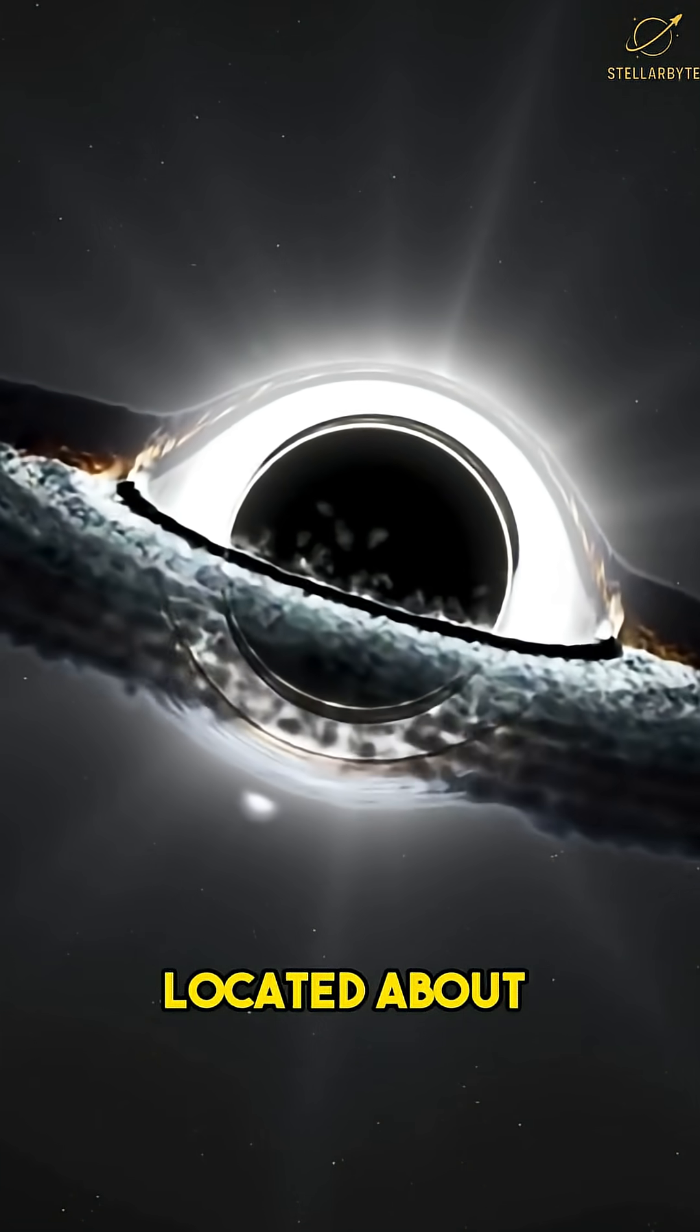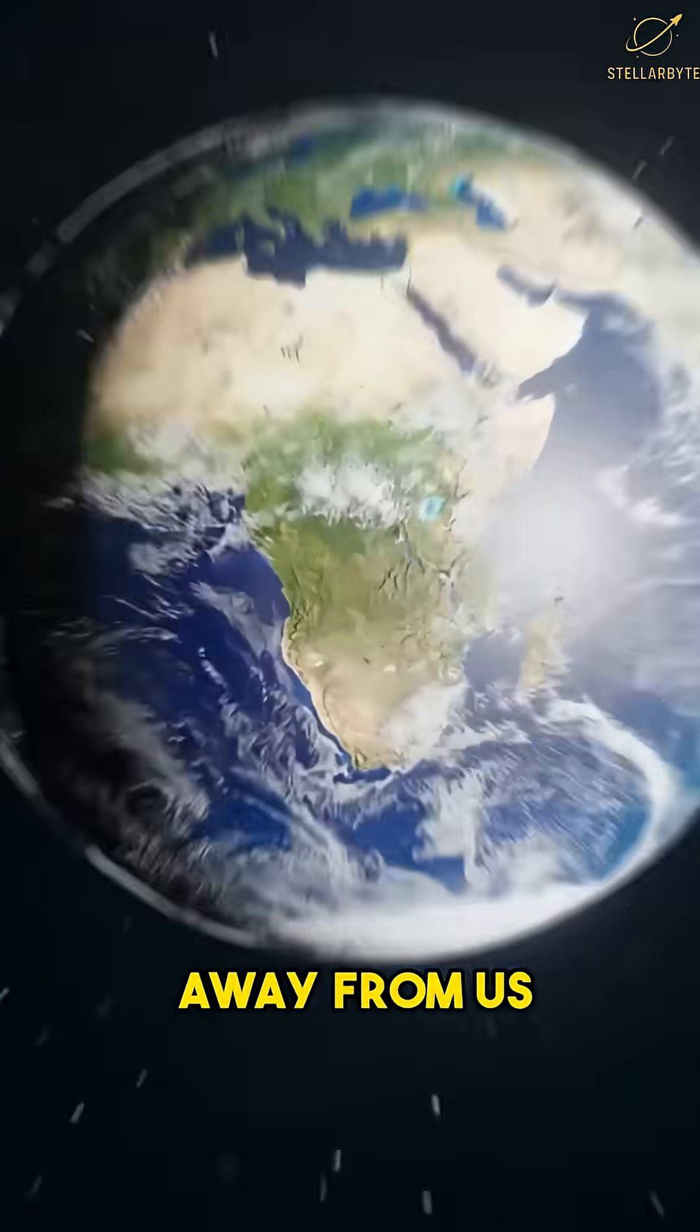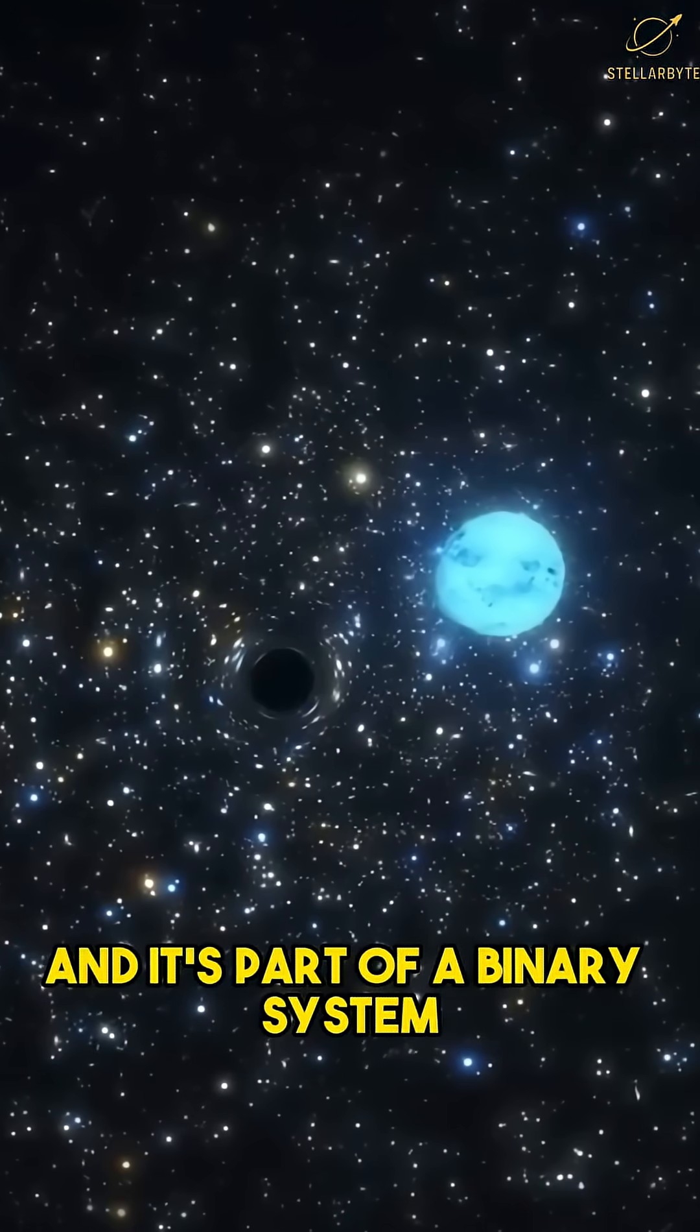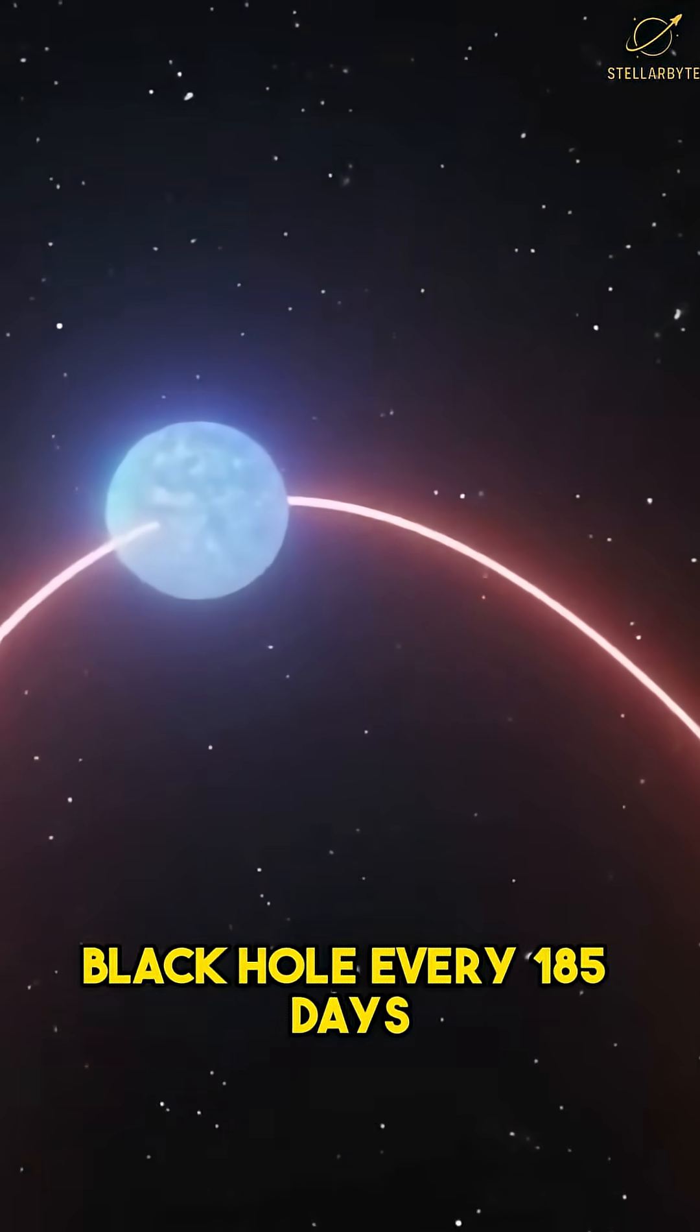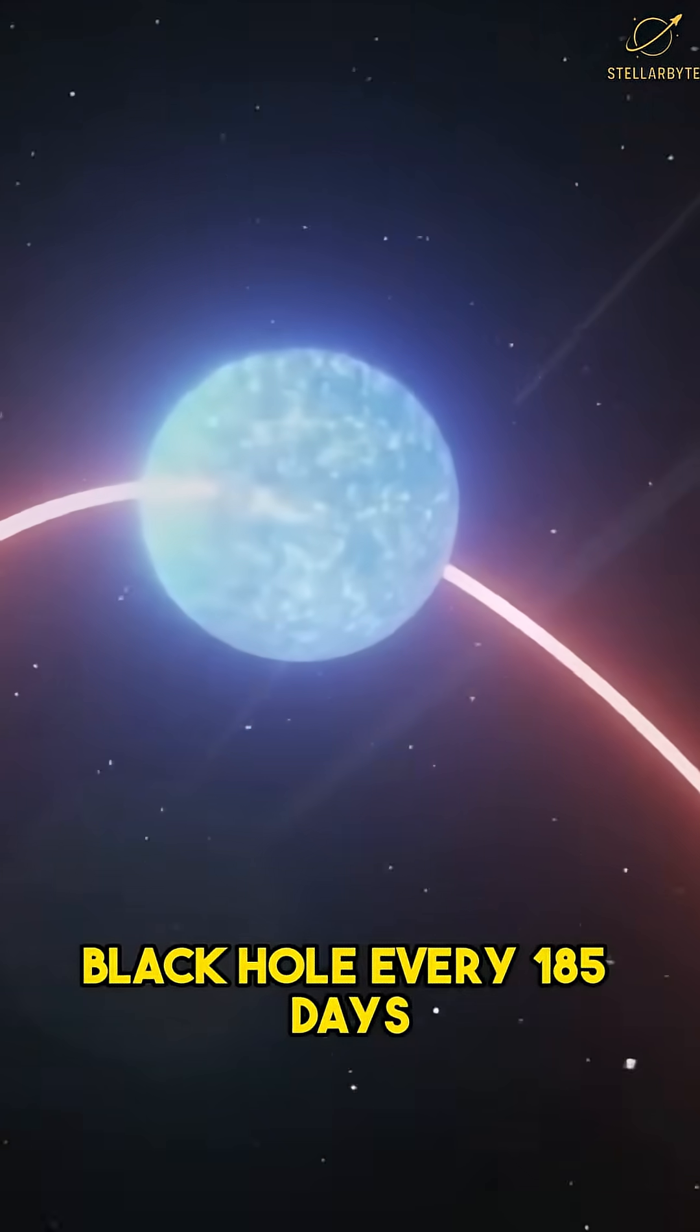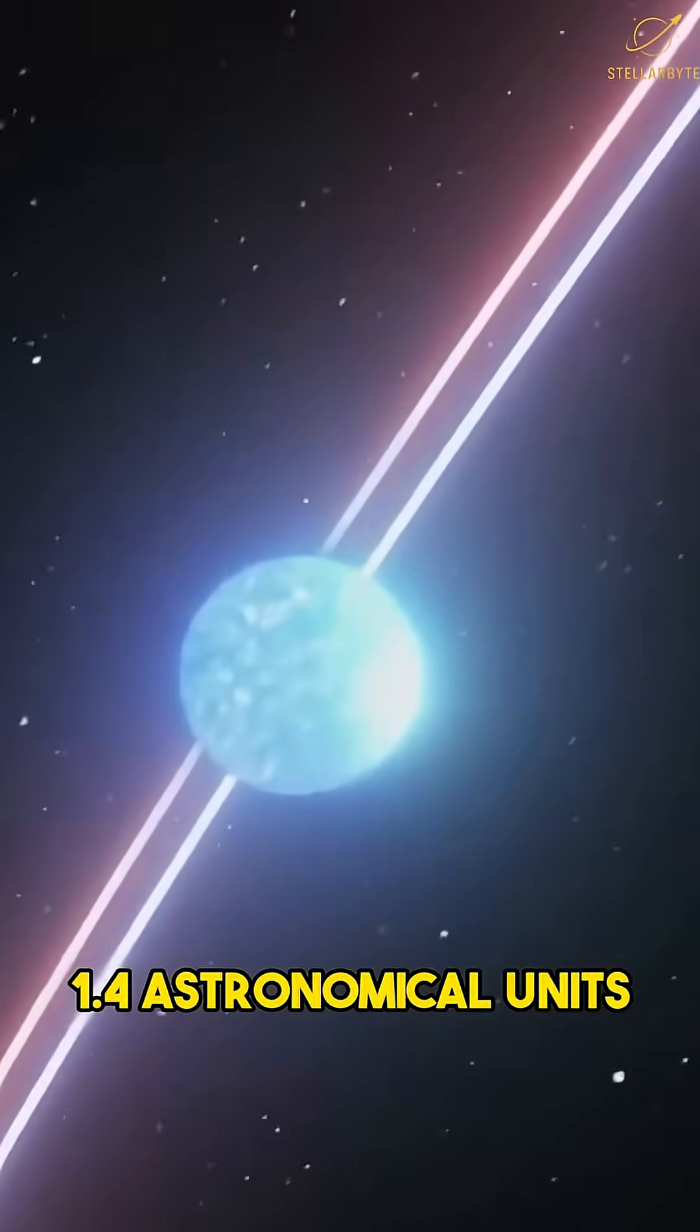Gaia BH1 is a black hole located about 1560 light-years away from us, and it's part of a binary system with a star that is very similar to our sun. This star orbits the black hole every 185 days at a distance of about 1.4 astronomical units.